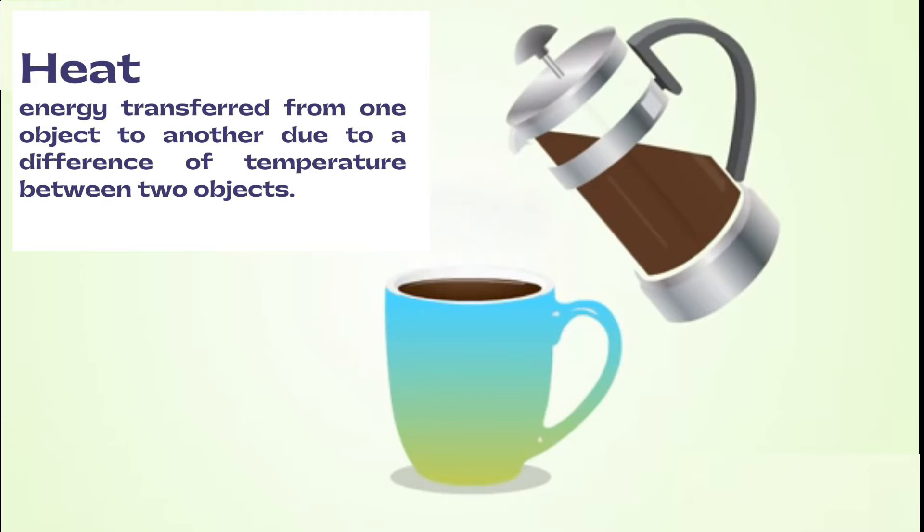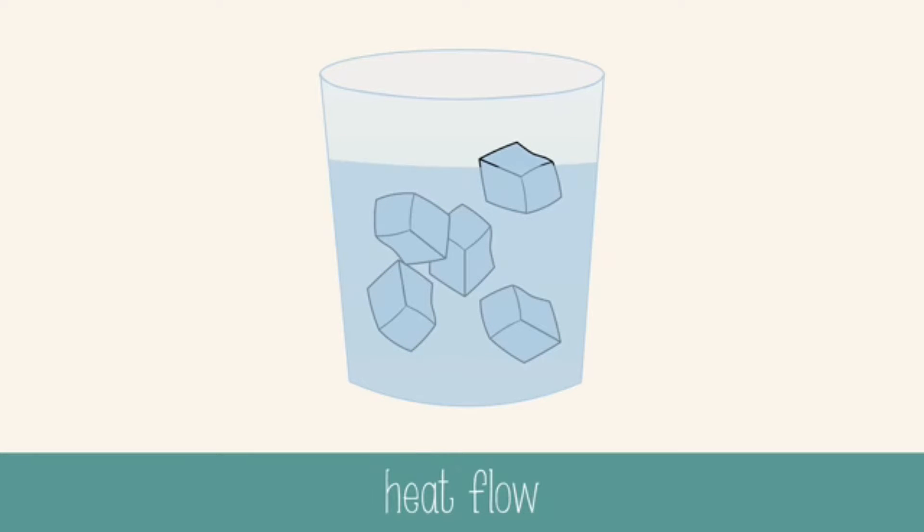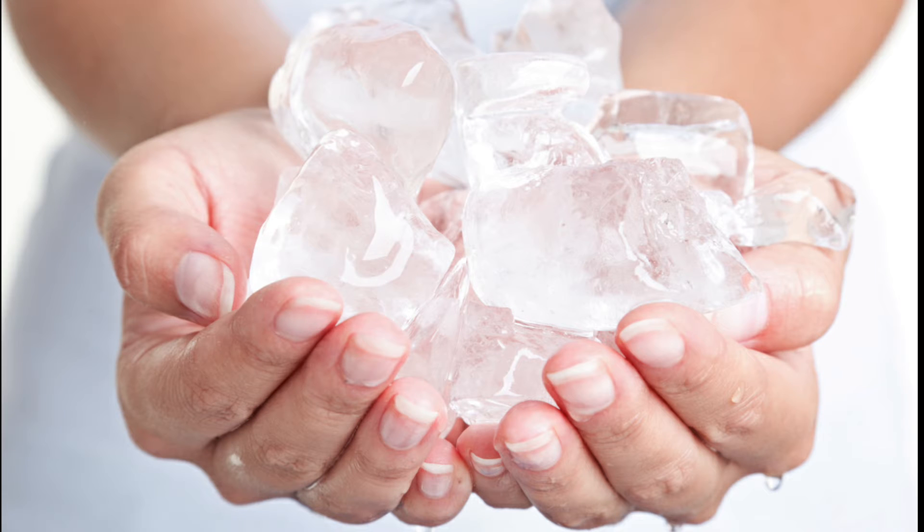Heat is a form of energy that is transferred from one body to another as the result of a difference in temperature. In the case of a glass of water with ice, the water is warmer than the ice, so heat will flow from the water to the ice. Heat is simply the transfer of energy from a hot object to a colder object.